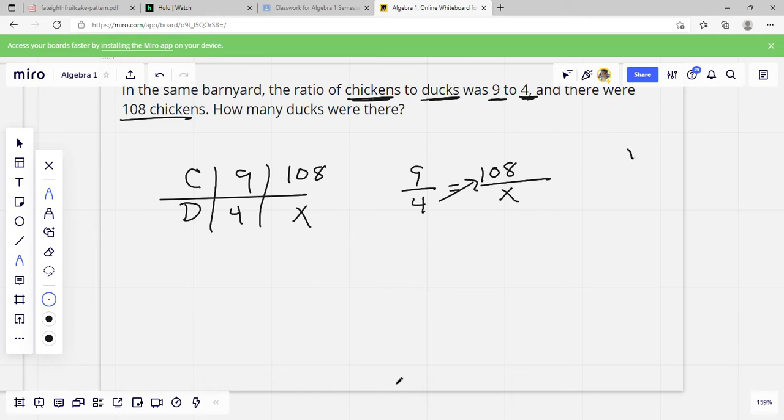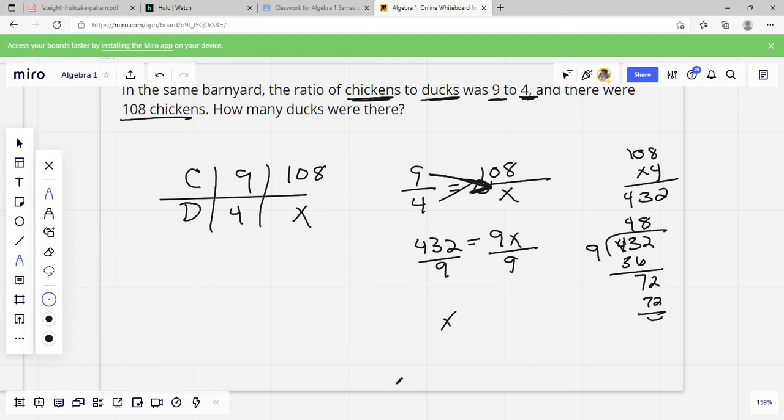Then we just cross multiply. So 4 times 108. 8 times 4 is 32. 4 times 1 is 4. 432 equals. Then we do 9 times X, which would be 9X. Then we just divide by 9. Whichever one is diagonal from your variable is the one you're going to divide. So 432 divided by 9. 9 times 7. Let's see, 9 times 5 is 45. So 9 times 4 is 36. 4, 7. And then 2. And then 9 times 8 is 72. So X equals 48.